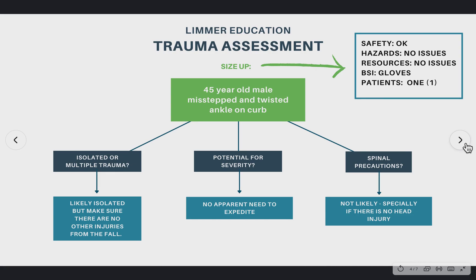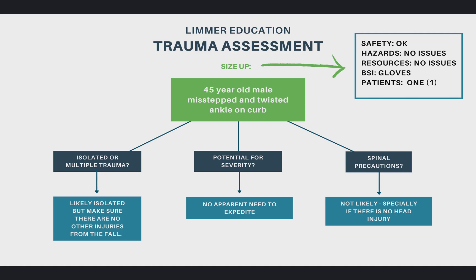So we take this and we say: the scene size-up looks good for safety, no issues as far as hazards, resources — one patient looks good. BSI — we're wearing gloves. Depending on COVID and other things, we may decide that a mask is appropriate on more calls than we did before. So this 45-year-old guy misstepped and twisted his ankle on the curb.